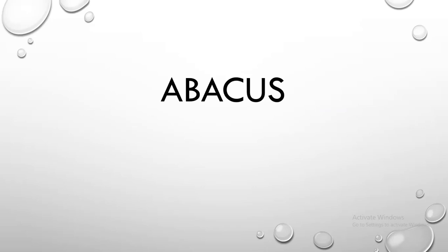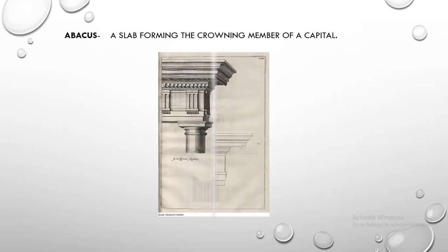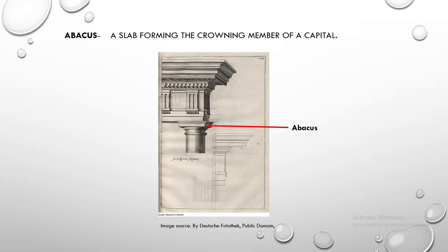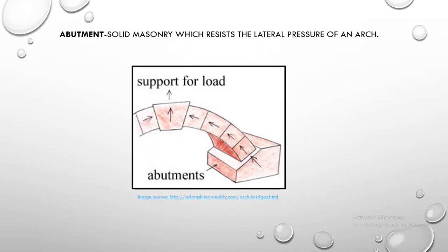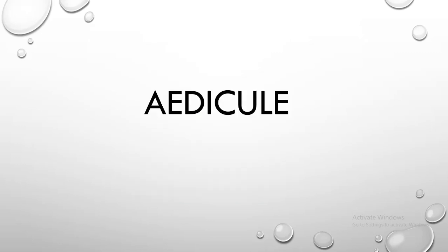Abacus. Abacus is a slab forming the crowning member of a capital. Abutment. Abutment is a solid masonry which resists the lateral pressure of an arch.